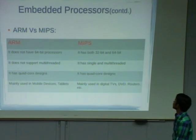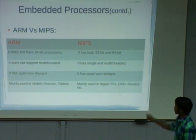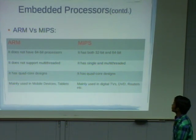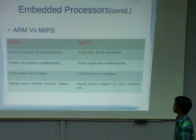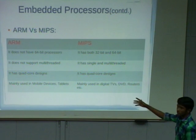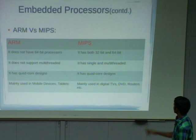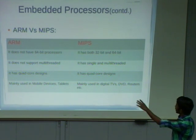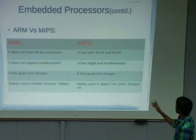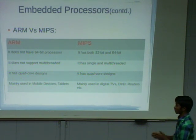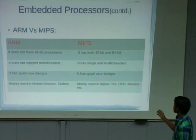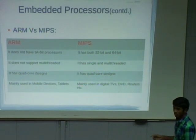Now comparing ARM versus MIPS: ARM does not have 64-bit processors, but MIPS has both 32-bit and 64-bit machines. ARM does not support multi-threading, but MIPS supports multi-threading. Both have four-core designs. ARM is mainly used for mobile devices and tablets, while MIPS is mainly used for network-related devices like routers and switches.